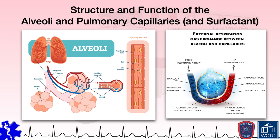If an alveolus lacks type 2 pneumocytes due to damage, such as chronic cigarette smoking or infection, it cannot repair itself nor can it produce surfactant, which will result in the alveolus collapsing as well. If enough alveoli become deflated or filled with fluid, a condition known as atelectasis—a complete or partial collapse of the entire lung or area of the lung—will occur. Deoxygenated blood that passes such a collapsed or otherwise impaired alveolus will remain deoxygenated. If this occurs in enough alveoli, hypoxemia will result.